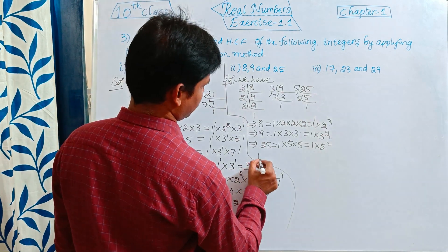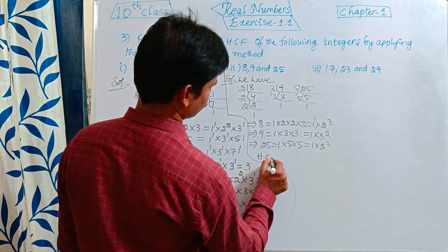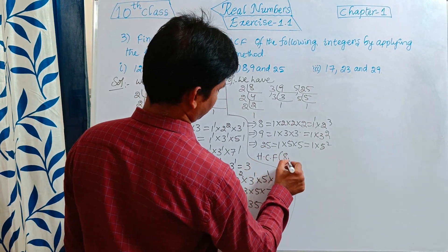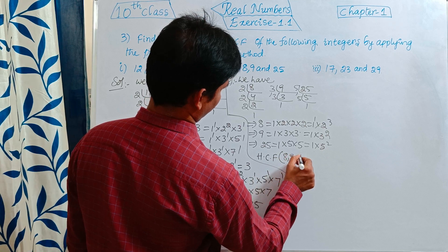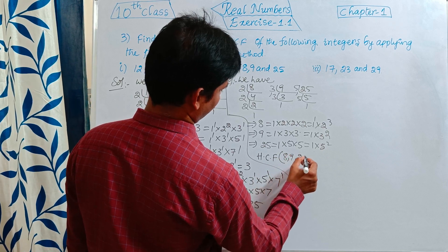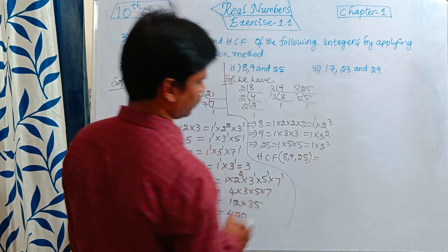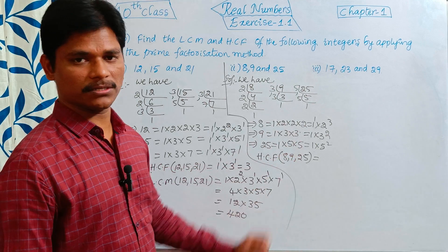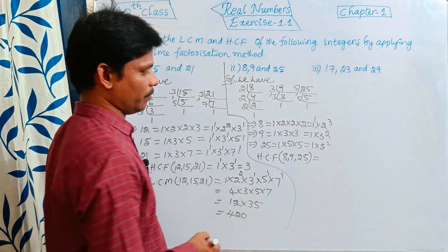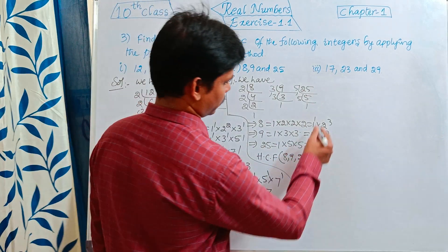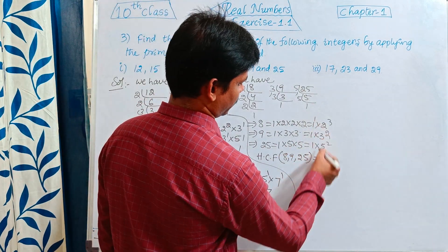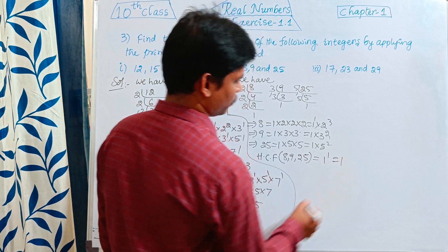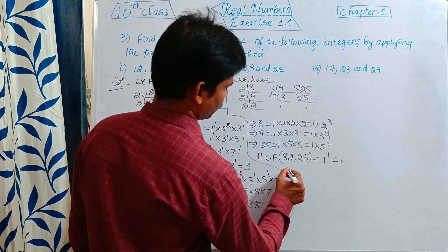Find out the HCF. HCF of 8, 9, 25 is equal to the smallest powers of common prime factors. The common prime factor is only 1, and the smallest power is 1. So HCF = 1.